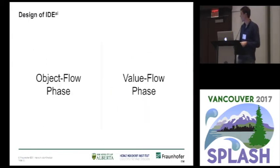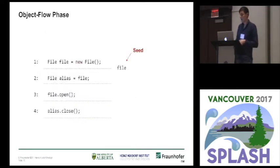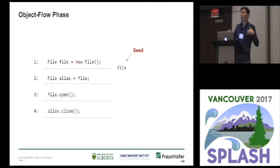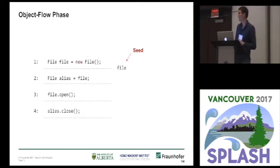I want now to come to the design of IDEAL. IDEAL is implemented in two phases: the first one is the object flow phase, and the second one is the value flow phase. For the value flow phase, we generate a graph that encodes the reachability from the seeds — it encodes all pointers to the seed object.